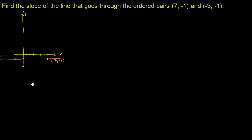Now, they're asking us to find the slope of the line that goes through the ordered pairs. Find the slope of this line. And just to give a little bit of intuition here, slope is a measure of a line's inclination. And the way that it's defined, slope is defined as rise over run, or change in y over change in x.